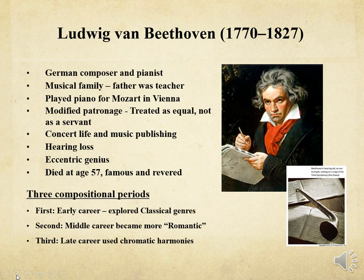Beethoven began to suffer a hearing loss in his late 20s that eventually led to total deafness. His infirmity brought a sense of isolation to the composer, and his personality became increasingly that of an eccentric genius. A ride in an open carriage during severe weather brought an attack of edema that was ultimately fatal, and he died at the age of 57, famous and revered. His compositional output can be divided into three periods. The early period reflects the inherited tradition of Haydn and Mozart. The middle period featured strong dynamic contrasts, explosive accents, and longer movements that are transitional into the Romantic period. The late period was marked by chromatic harmonies and experimentation that sound almost like they're from the 20th century.